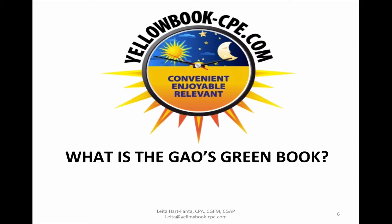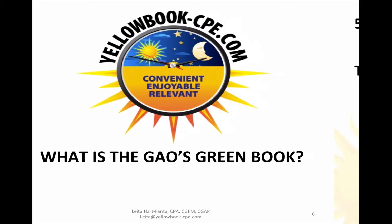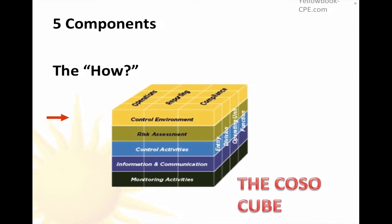In this episode, we answer the question: what is the GAO's Green Book? Well, it's an ideal — it's an ideal for internal controls.